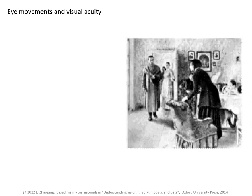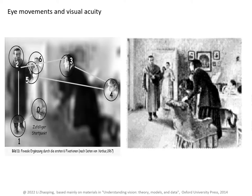Although we have the impression that we see this image clearly, in fact we only see clearly at or near the center of our gaze. So we have to move our eyes from one location to another on this image in order to see the whole picture.